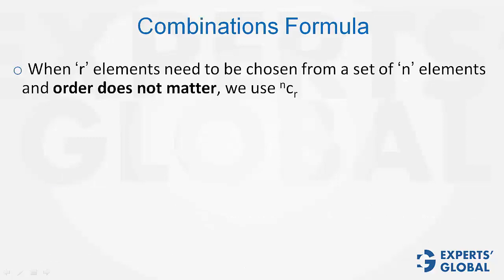Combinations formula. When R elements need to be chosen from a set of N elements and order does not matter, we use NCR. NCR equals N factorial divided by N minus R factorial times R factorial.